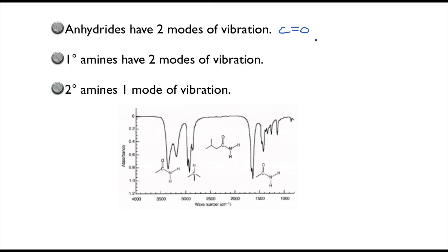Let's remind ourselves what an anhydride is. An anhydride is formed when you take two carboxylic acids and dehydrate them, as shown on the screen. So this would be acetic anhydride — it's two molecules of acetic acid that have come together and been dehydrated. When talking about anhydrides having two modes of vibration, we have two carbonyls, and the starting ballpark place for carbonyl vibration is about 1710–1715 wavenumbers.